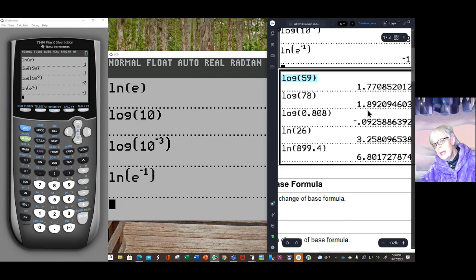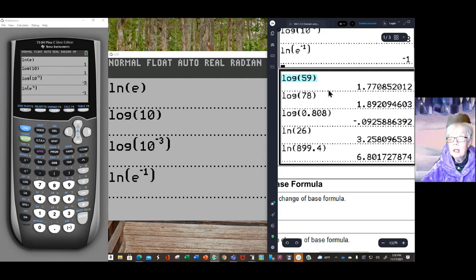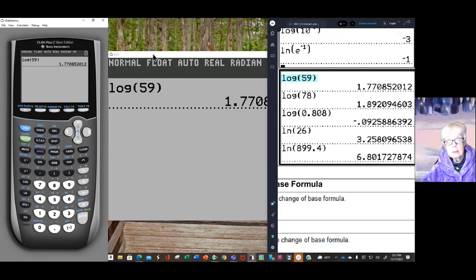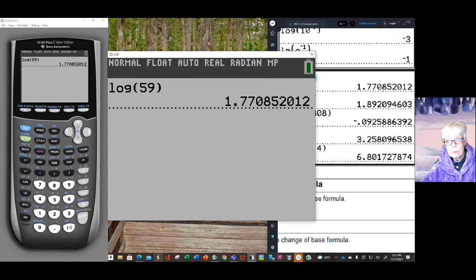Now we're going to answer these questions. And here are the answers my calculator gave me. In your homework, you're going to be asked to round to four decimal places. So you're going to have to round carefully. Log. There's the log key right here. Log. 59. Close parenthesis. Enter. There you go. You just get a number.